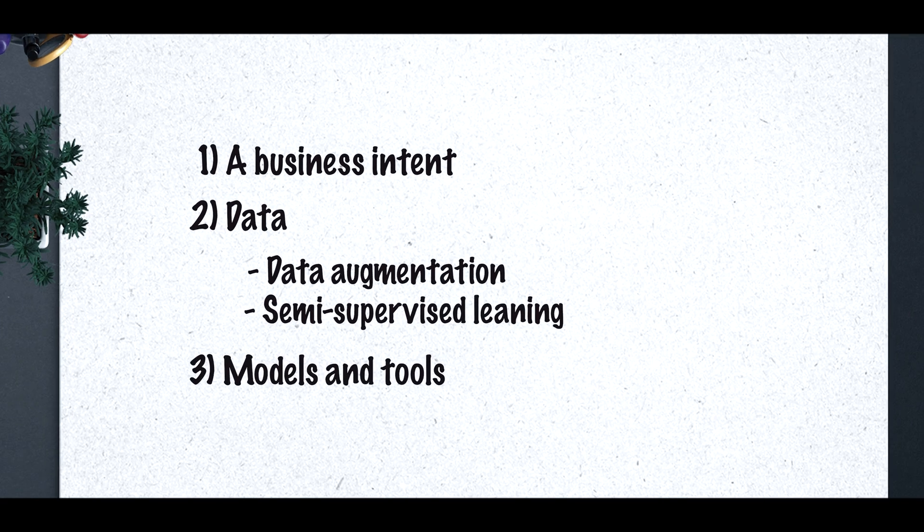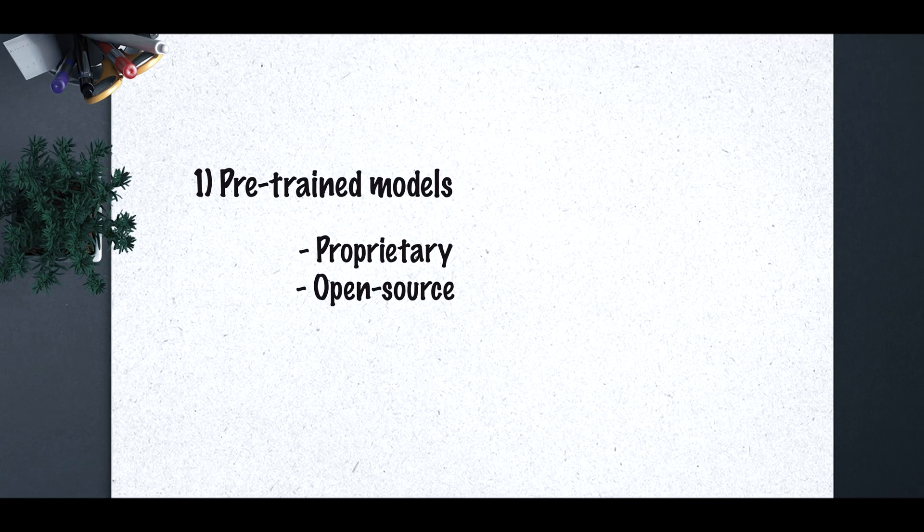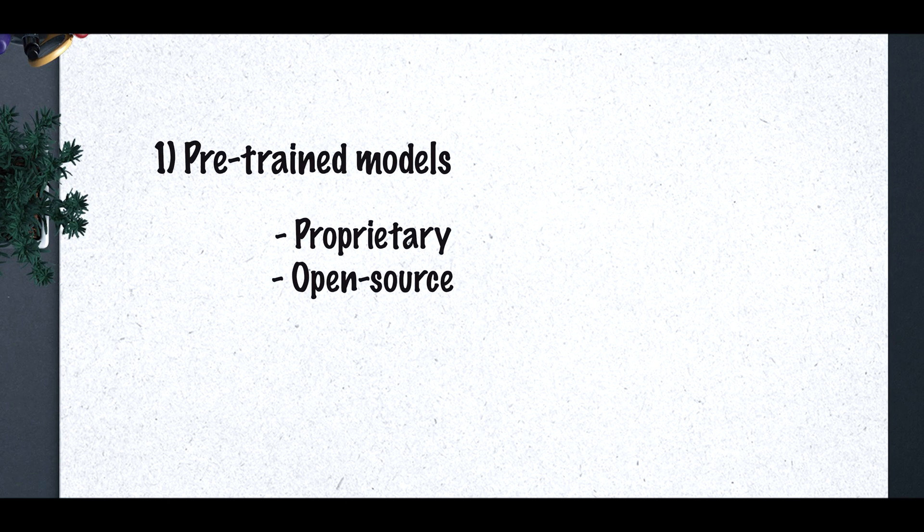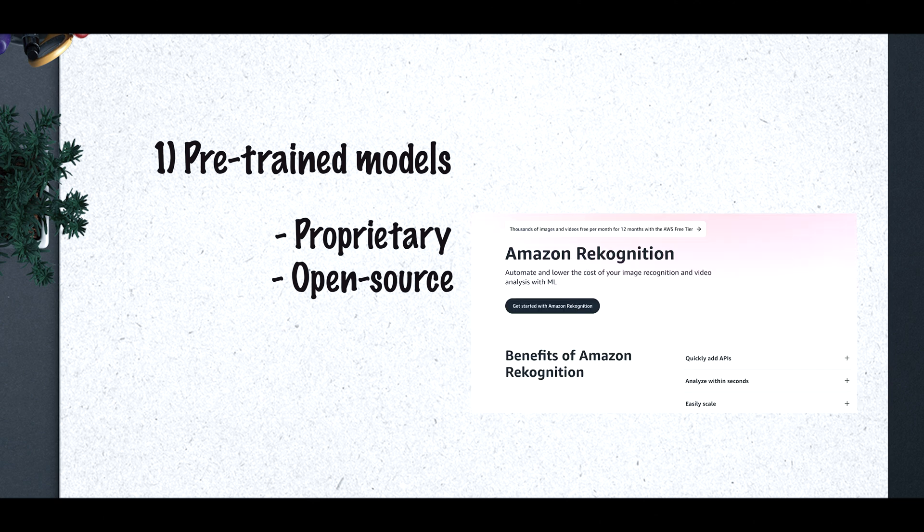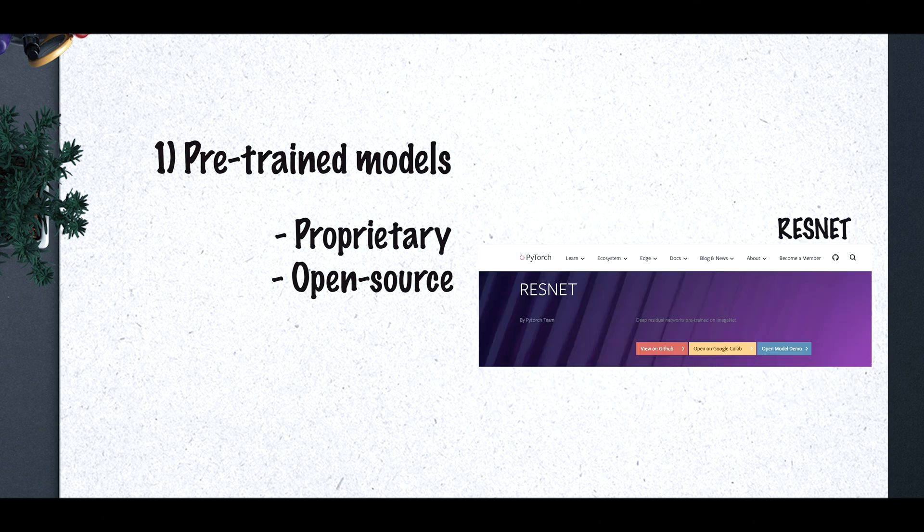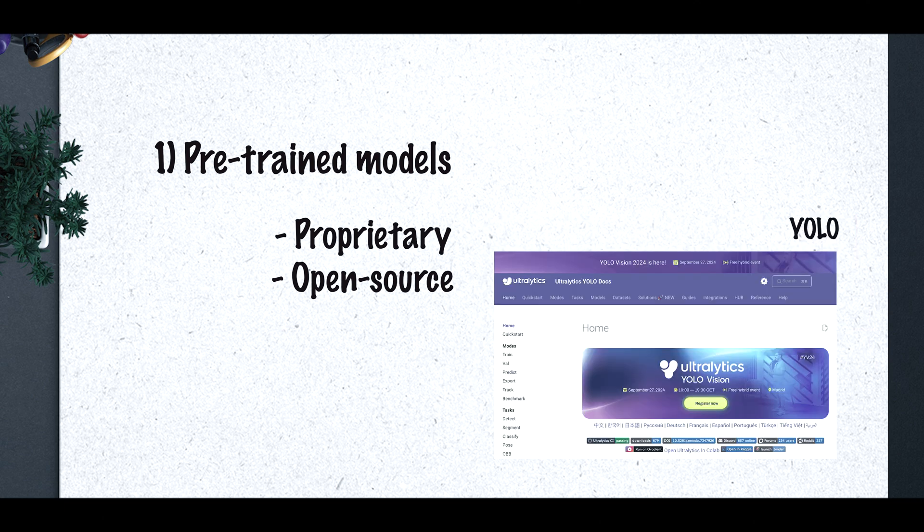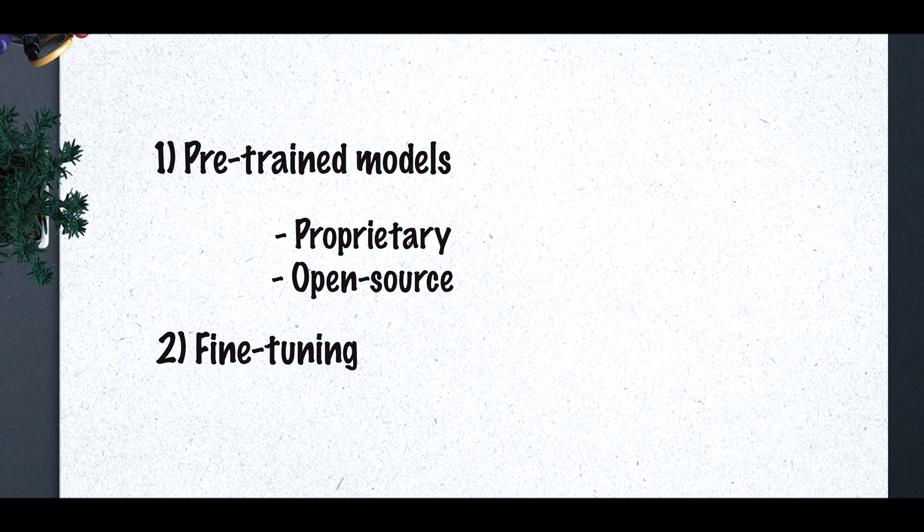After data comes the model and tools. Once you've got your data sorted, it's time to choose your model approach. There are three main paths managers can take. First, there are pre-trained models which are ready to use off the shelf. These come in two flavors: proprietary solutions like Amazon Recognition or open-source options like ResNet or YOLO. But what if you need something more tailored? That's where fine-tuning comes in. We talked about fine-tuning in the previous episode.